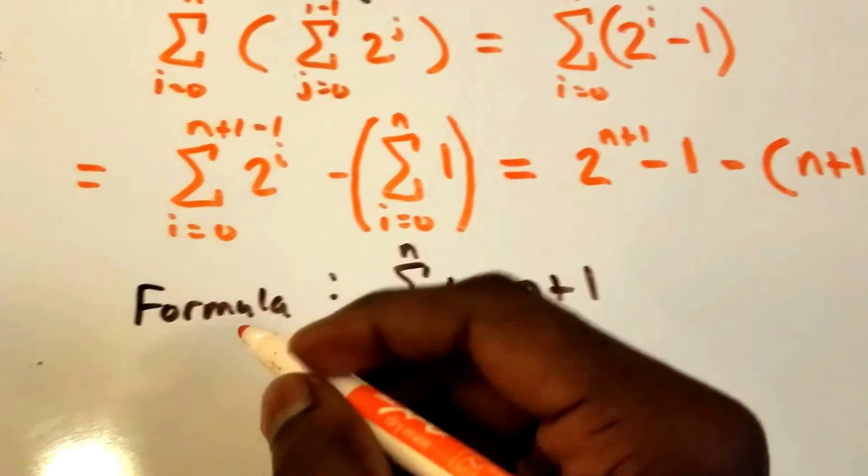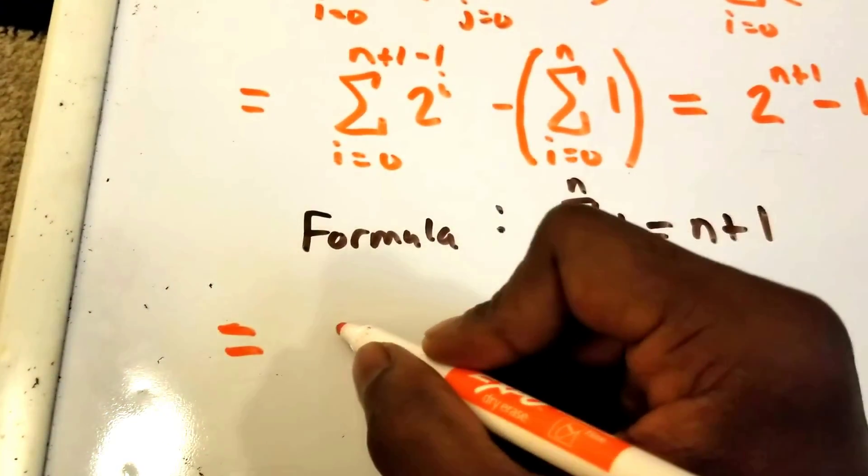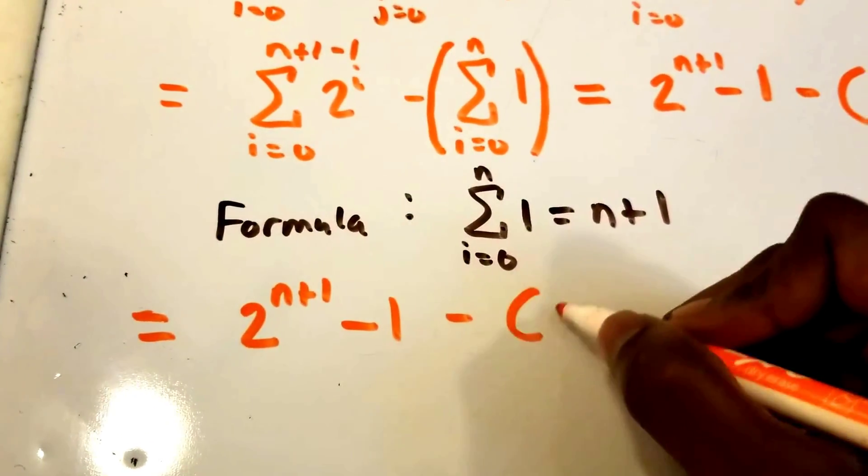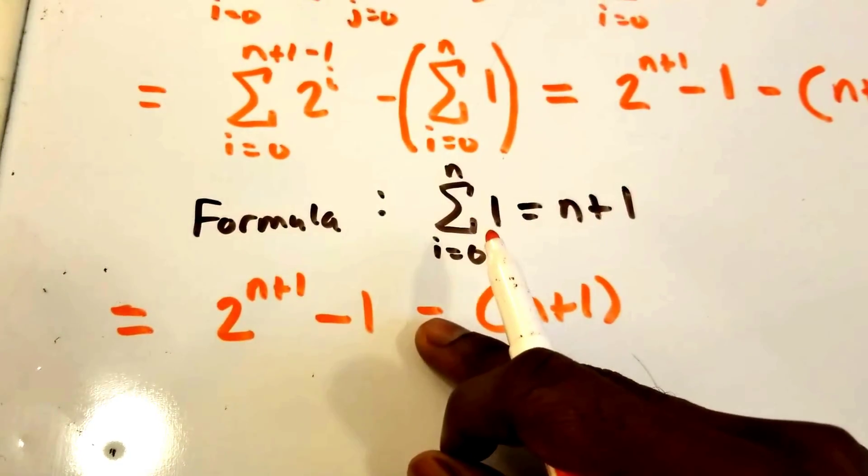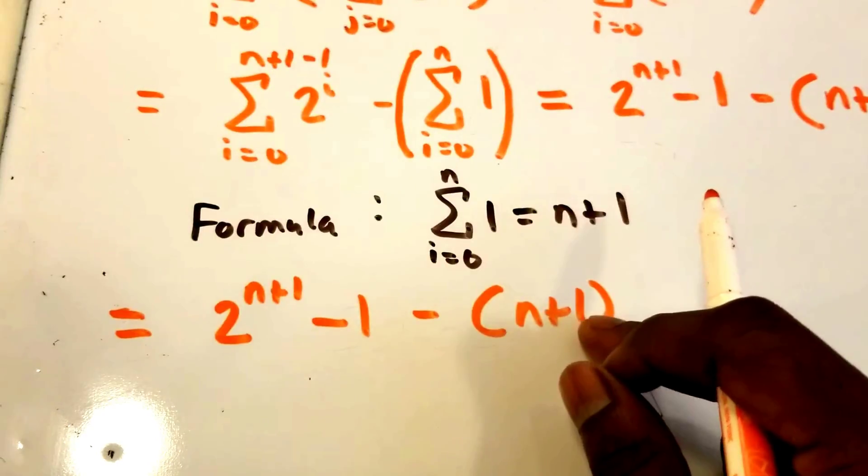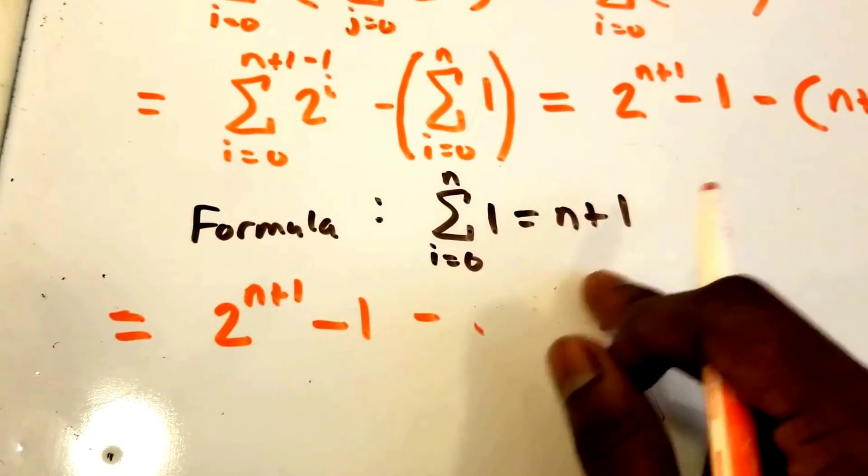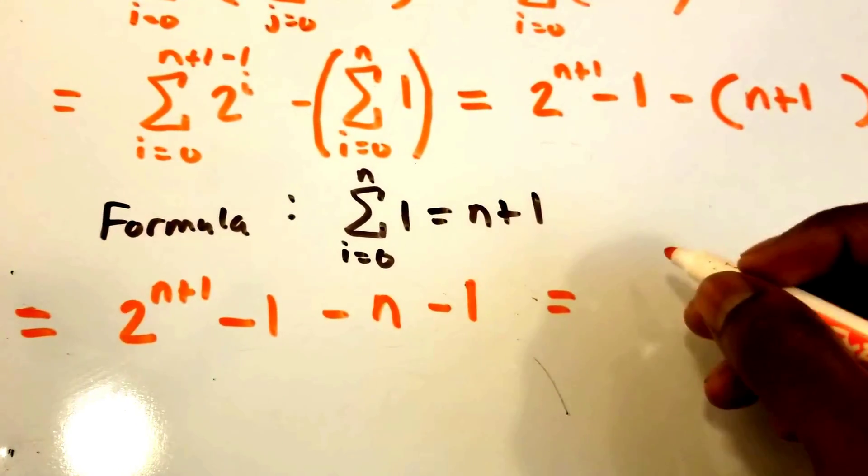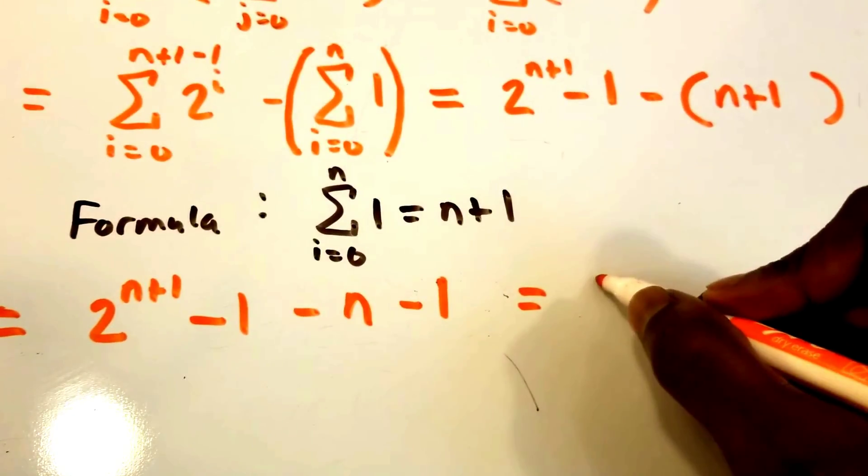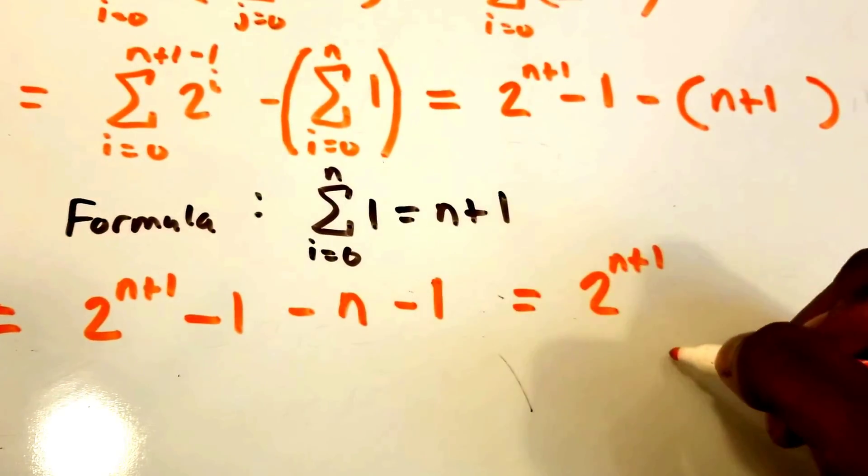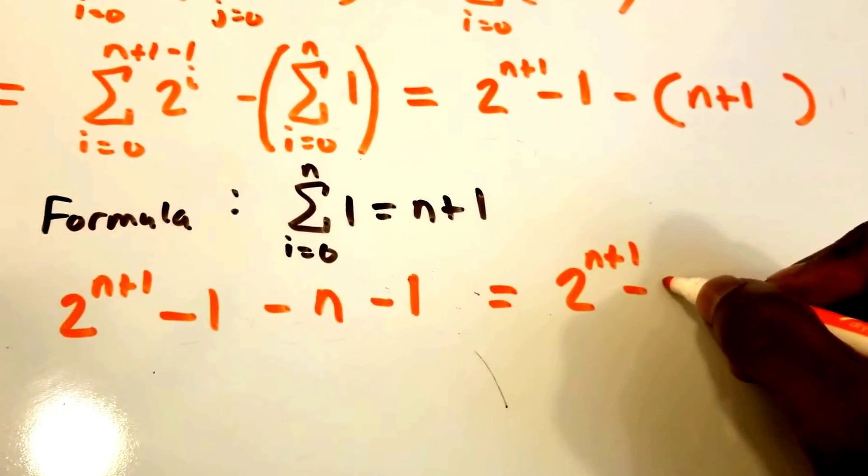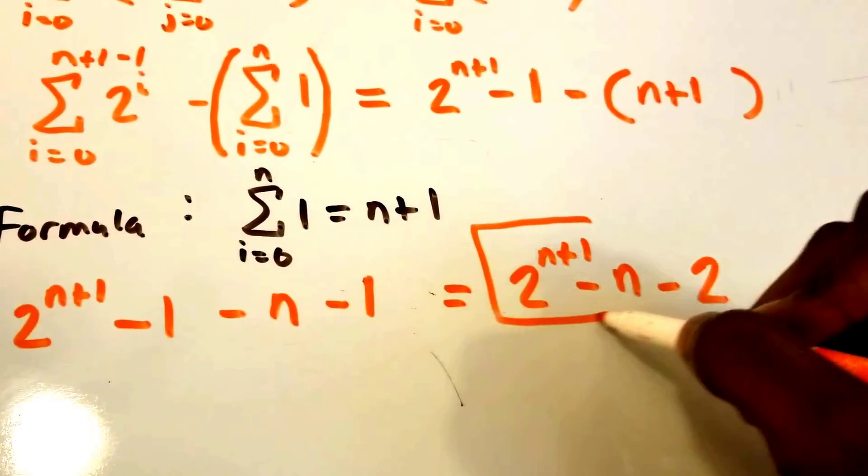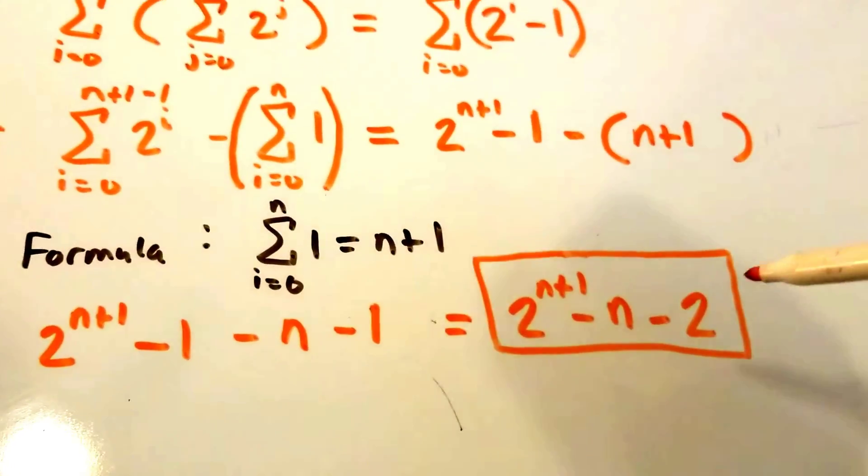Now let's continue solving for our summation. We had 2 to the power of n plus 1 minus 1, minus we had n plus 1, so minus n minus 1. This is equal to 2 to the power of n plus 1 minus n minus 2. And so that is our answer.